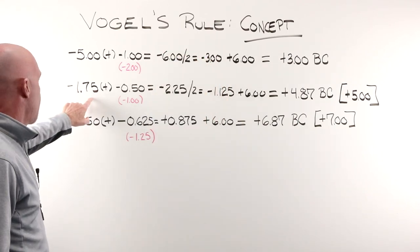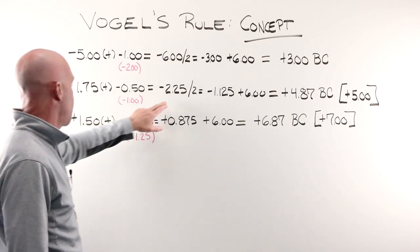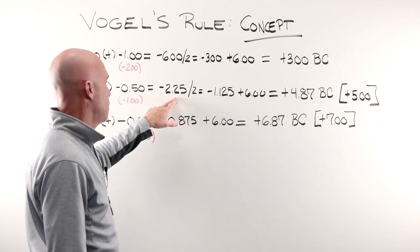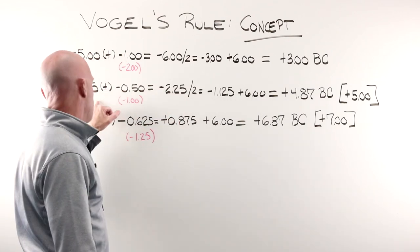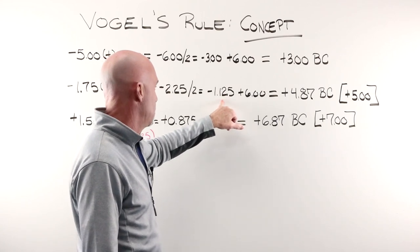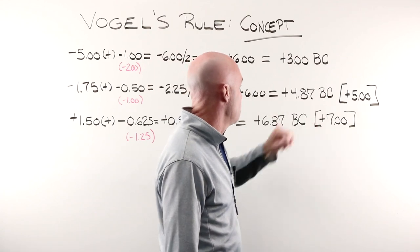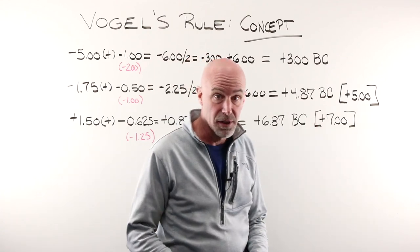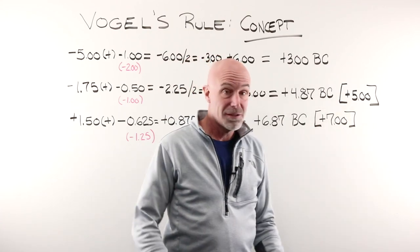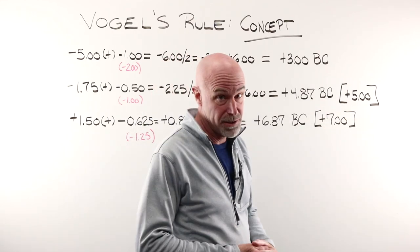Still minus. Spherical equivalent, minus one, half of that is minus 50. Added to that, gives us minus 2.25. Because it's a minus prescription, we take half that value, minus 1.125, and we add six to it. That gives us a base curve of plus 4.87. For simplicity's sake, since this is all conceptual, we're going to round that up to five so that the math stays easy.